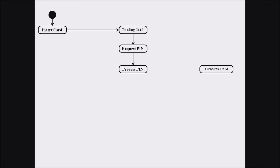For proceeding to the next step, the system must authorize the card. That is, it reads the data encoded in the ATM card and verifies whether the pin code entered by the customer is correct. All these activities are done by the ATM machine as well as the bank server, and the authorization process is the next activity in this system.